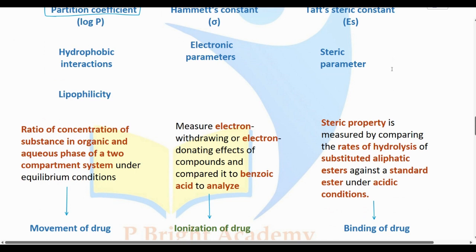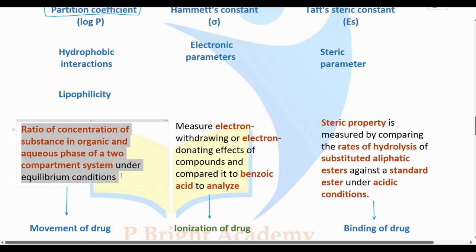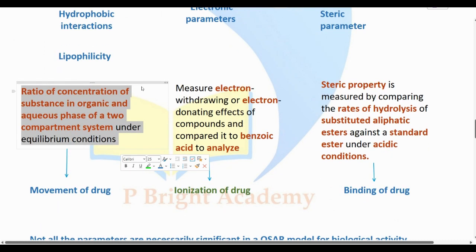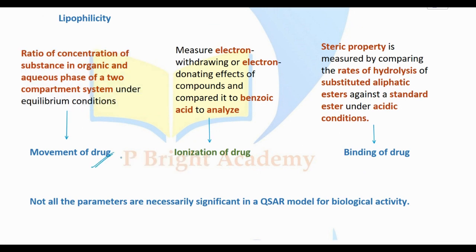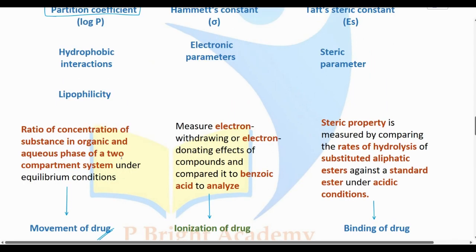The partition coefficient is the ratio of concentration of the substance in an organic and aqueous phase of a two-compartment system. This parameter lets us know about the movement of drug molecules - this is the first phase of drug movement.